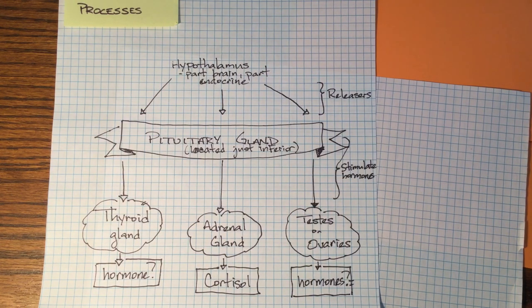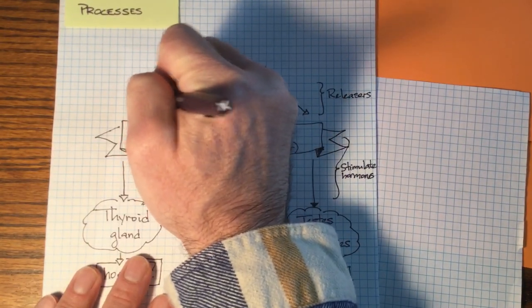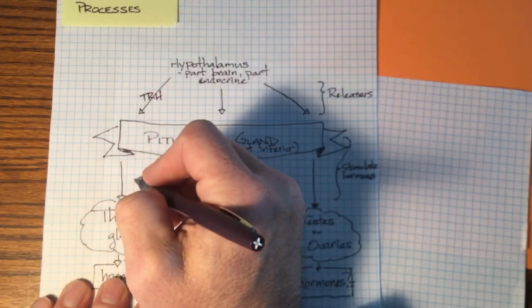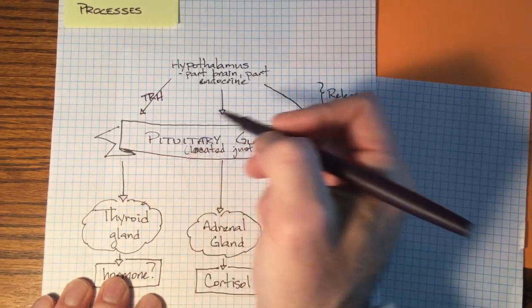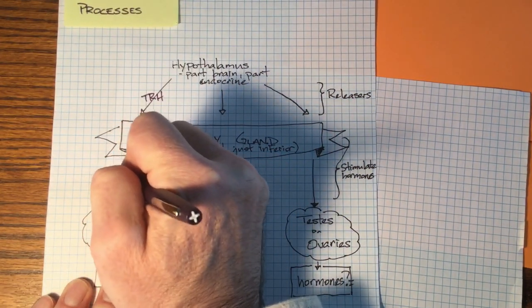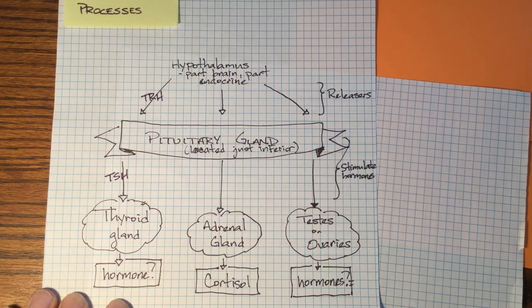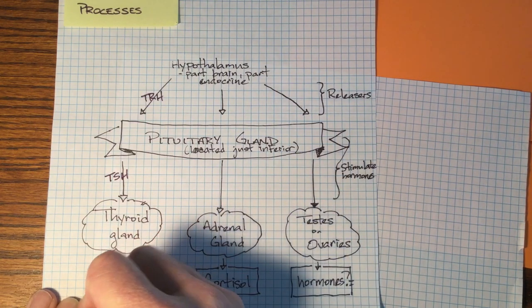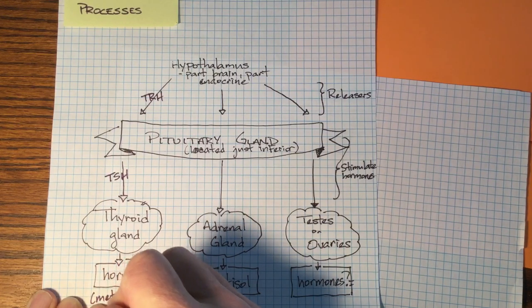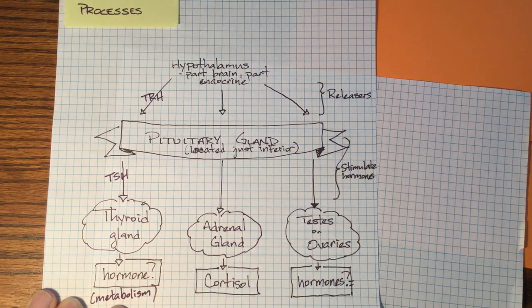So cascade number one involves the thyroid hormone. The hypothalamus will release a hormone called thyroid releasing hormone, otherwise known as TRH, and that will flow into the bloodstream to the pituitary gland, and it'll tell the pituitary gland to release a hormone called TSH, otherwise known as thyroid stimulating hormone, and that will tell the thyroid gland to release a really important hormone related to your metabolism, which I'm going to have you look up, and if you show me this answer on your notes, that's worth extra points.